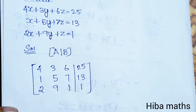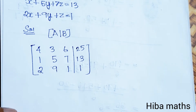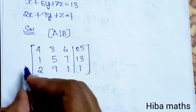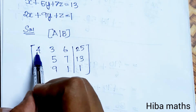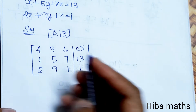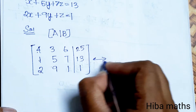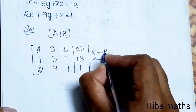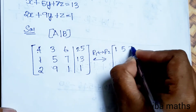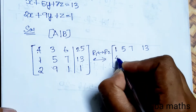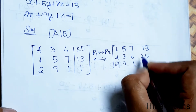We need a 1 in the first row, first column, but here it is 4. So I will interchange the rows in the matrix. R1 interchanges with R2. The new R1 becomes: 1, 5, 7, 13. The new R2 becomes: 4, 3, 6, 25. R3 stays: 2, 9, 1, 1.